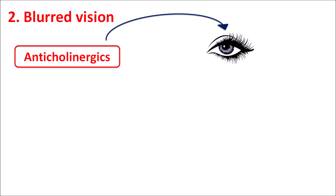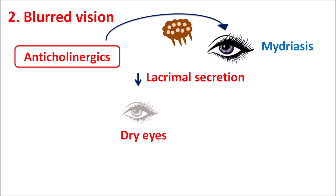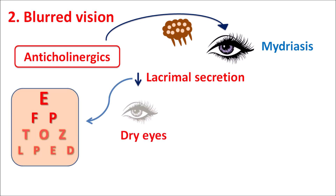The second side effect is blurred vision. Anticholinergics affect the eye by producing pupillary dilatation, resulting in mydriasis — which is why these drugs can be used as mydriatics. They also act on the lacrimal glands, reducing lacrimal secretion and causing dry eyes, which results in blurred vision.